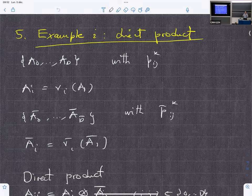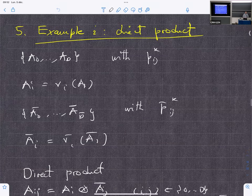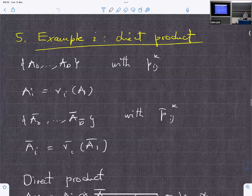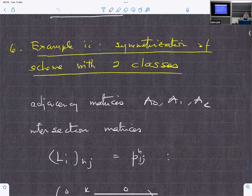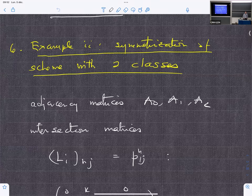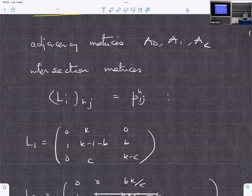So, two minutes on examples. I apologize. So there's a trivial example to get a bivariate scheme. You just take the product, the direct product, of two P-polynomial schemes. I won't dwell into that. It's very obvious.